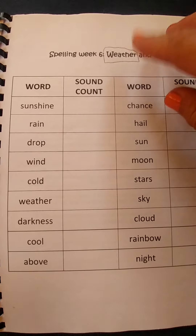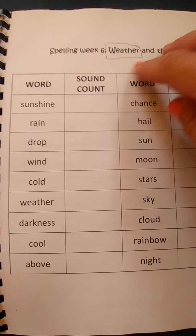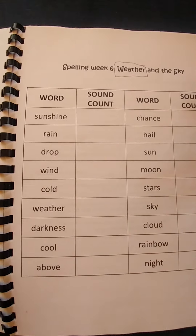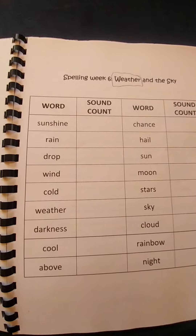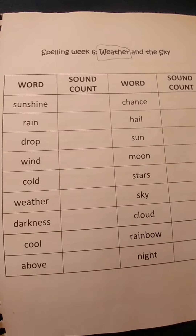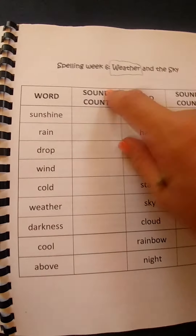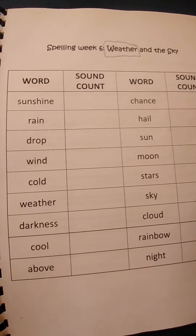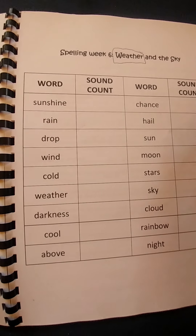We can look at the weather according to temperature. Sometimes it's hot, sometimes it's cold because it's sunny or it's rainy. So this week's all about weather and the sky.